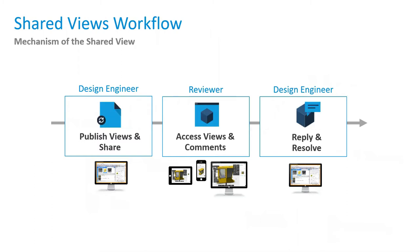The way it works: the design engineer right-clicks on a file in Vault and selects Shared Views. The engineer publishes and shares that design representation to the cloud, and receives a URL — an A360 URL — which can be shared with anyone. The reviewer accesses the view through an iPad, mobile, or desktop, supplies comments, and those comments sync back down into Vault, notifying the design engineer to reply and resolve issues.